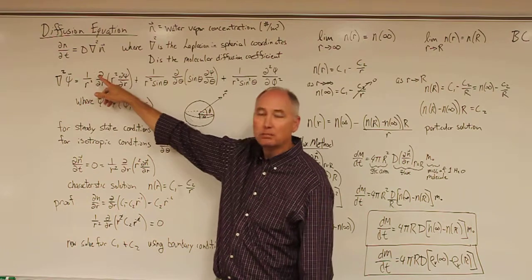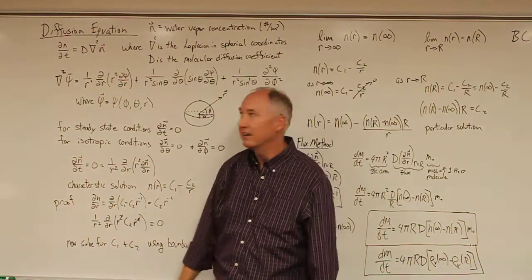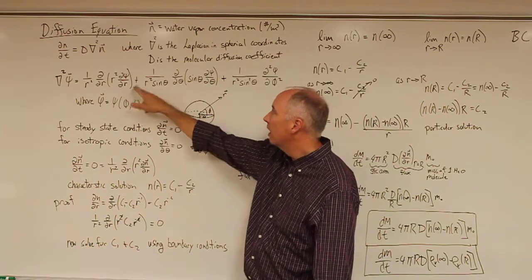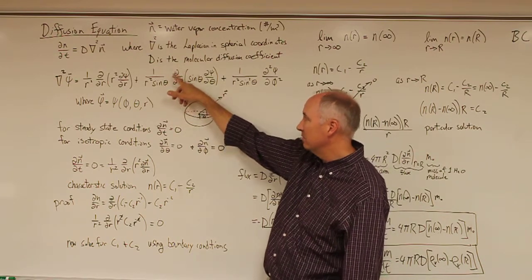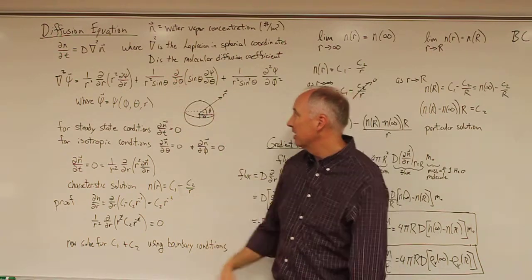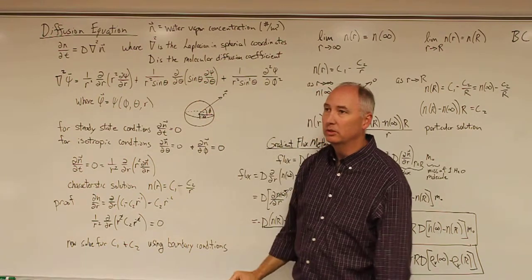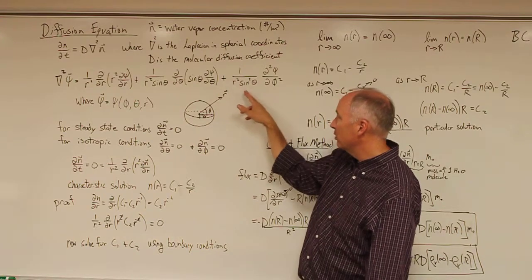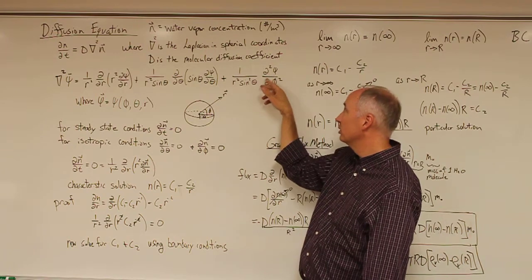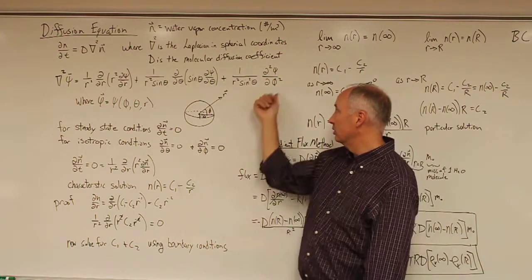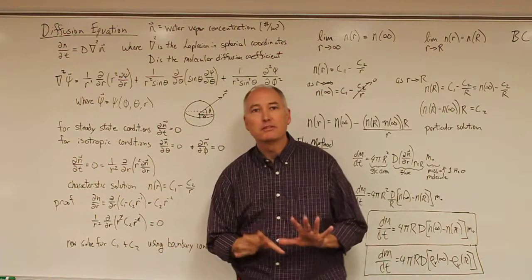The Laplacian is: 1 over r squared times the partial with respect to r of r squared times the partial derivative of the function with respect to r, plus 1 over r squared times the sine of the azimuth angle times the derivative with respect to the azimuth angle of sine of theta times the derivative with respect to the azimuth angle, plus 1 over r squared sine squared of the azimuth angle times the second partial derivative of the function with respect to the zenith angle.